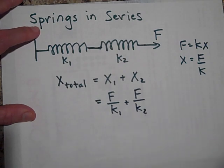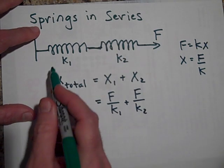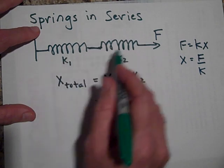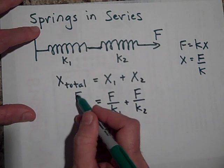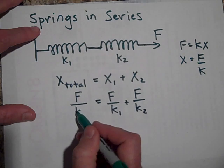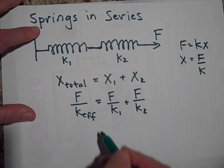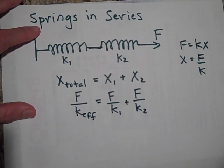And so if we wanted to replace that with one spring that had the same spring constant as this combo, that would be F and that would be K effective.